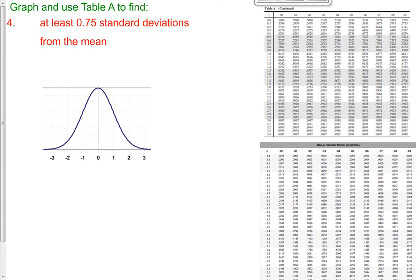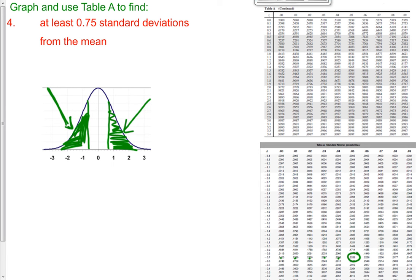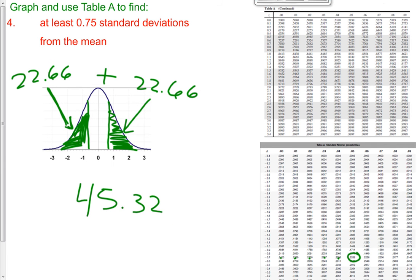Question number 4 — hopefully this makes sense after doing question 3. We want to find the percent of observations that lie at least 0.75 standard deviations away from the mean. Here's 0.75 and here's a negative 0.75. All you need to do is find this percent and double it, because it's symmetrical about the mean. A negative 0.75 gives us 22.66%, so this side is also 22.66%. When you add them together, you get 45.32% of observations lie at least 0.75 standard deviations away from the mean.